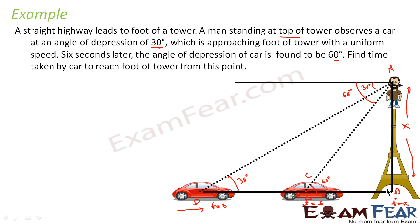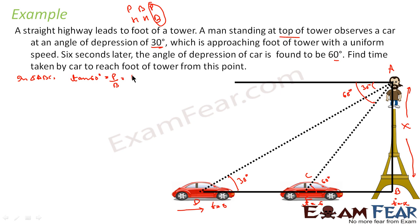In triangle ABC, we take C as the frame of reference angle. We are dealing with perpendicular and base, so we use tan. Tan 60° = perpendicular/base = AB/BC = x/BC. Since tan 60° = √3, we get BC = x/√3.